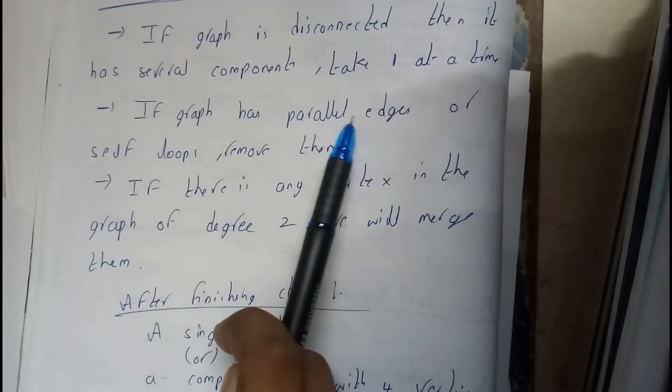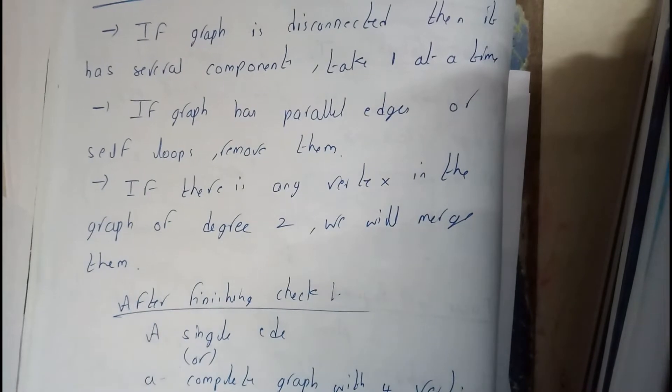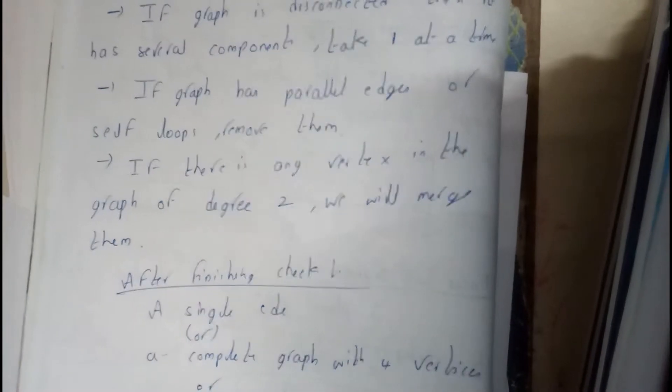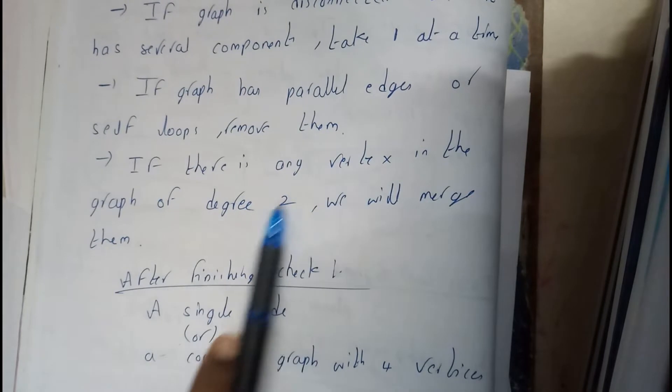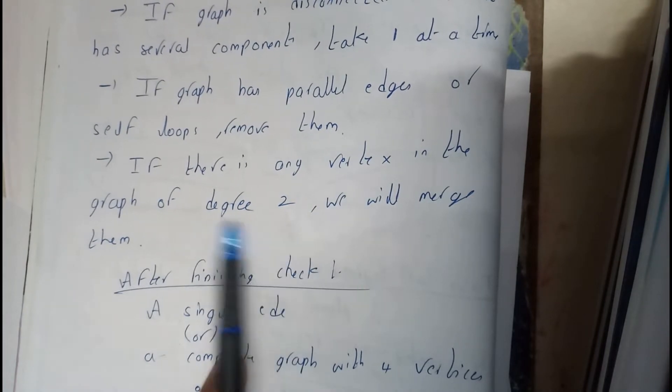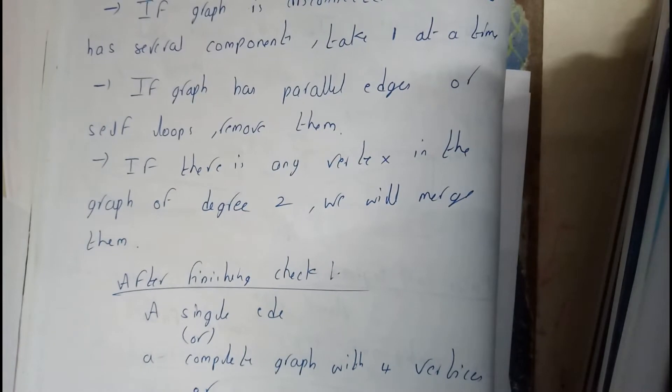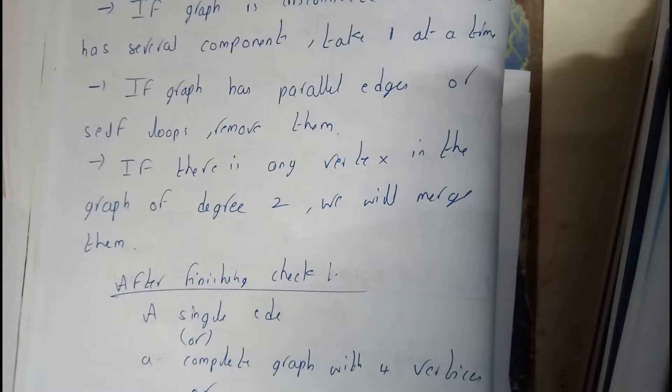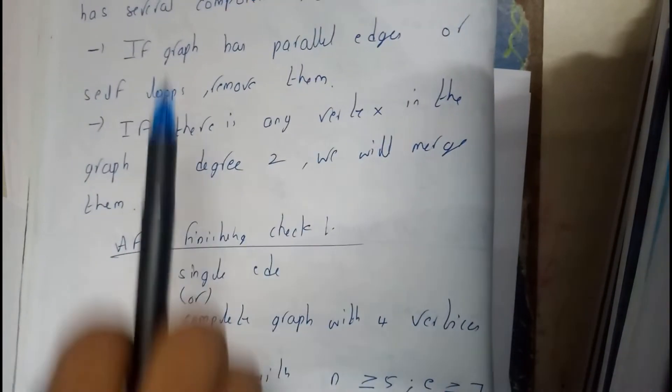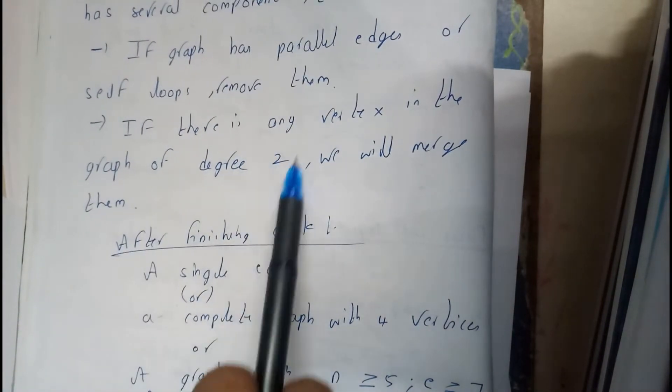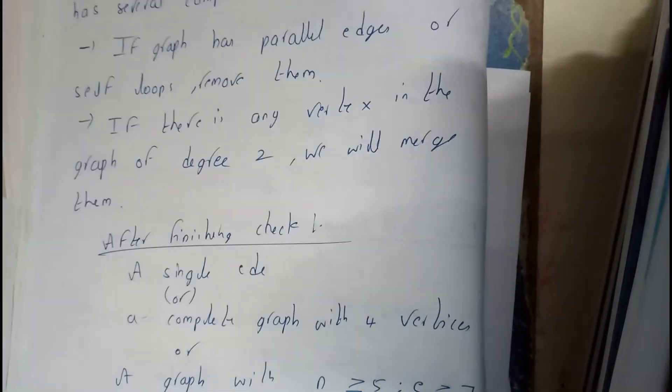Once you have selected the first one, remove all the parallel edges and self loops. If that's done, then check for a vertex where the degree is 2 and then merge them. After finishing all these three steps, you will be continuing like this unless and until you end up with results.